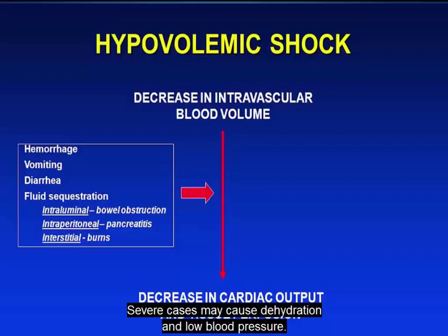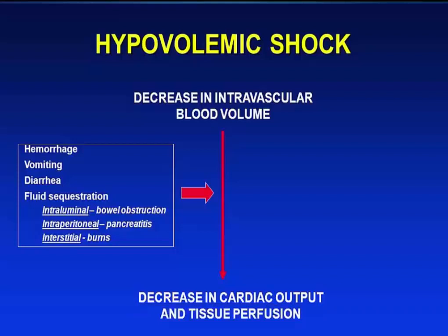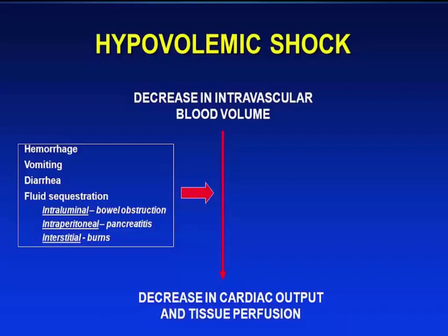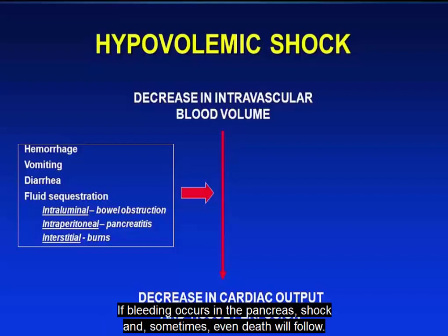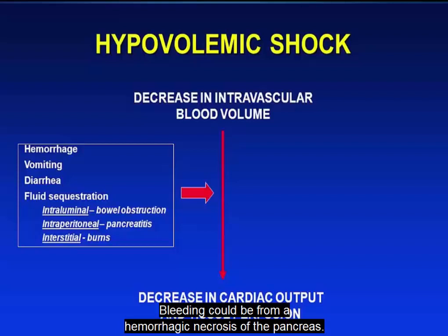Severe cases may cause dehydration and low blood pressure. The heart, lungs, and kidneys may begin to fail. If bleeding occurs in the pancreas, shock and sometimes even death will follow. Bleeding could be from a hemorrhagic necrosis of the pancreas.